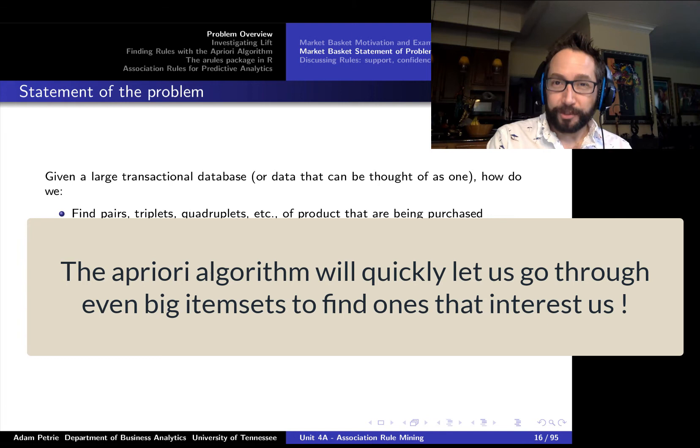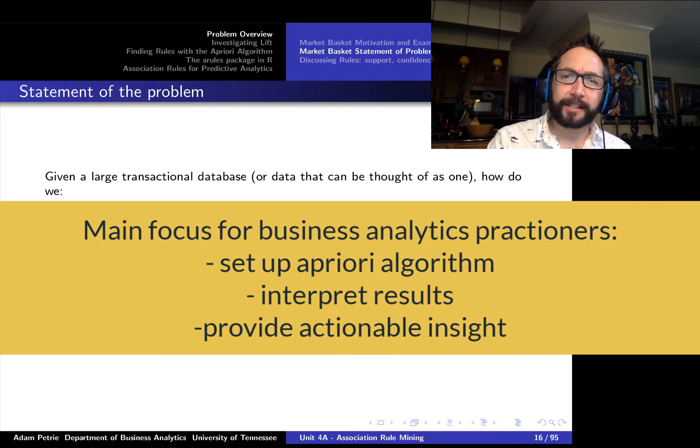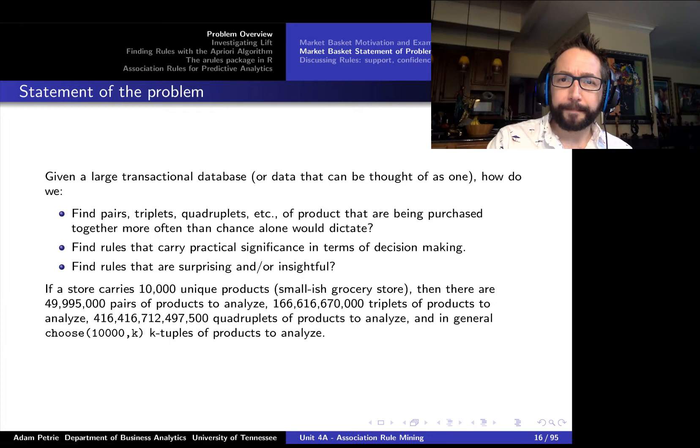So we're going to have to find a shortcut for doing this sort of analysis here, this analytics. Luckily, there is an algorithm called the a priori algorithm that will do this analysis for us very quickly. And it's going to be up to us really as business analytics practitioners to interpret the results. So the good news is we're not going to have to do most of this programming. We're not going to have to write four loops that go through every possible combination and scan through the data set. That's going to be done for us. We just want to make sure that we can interpret the output of these rules and identify where the opportunities are.